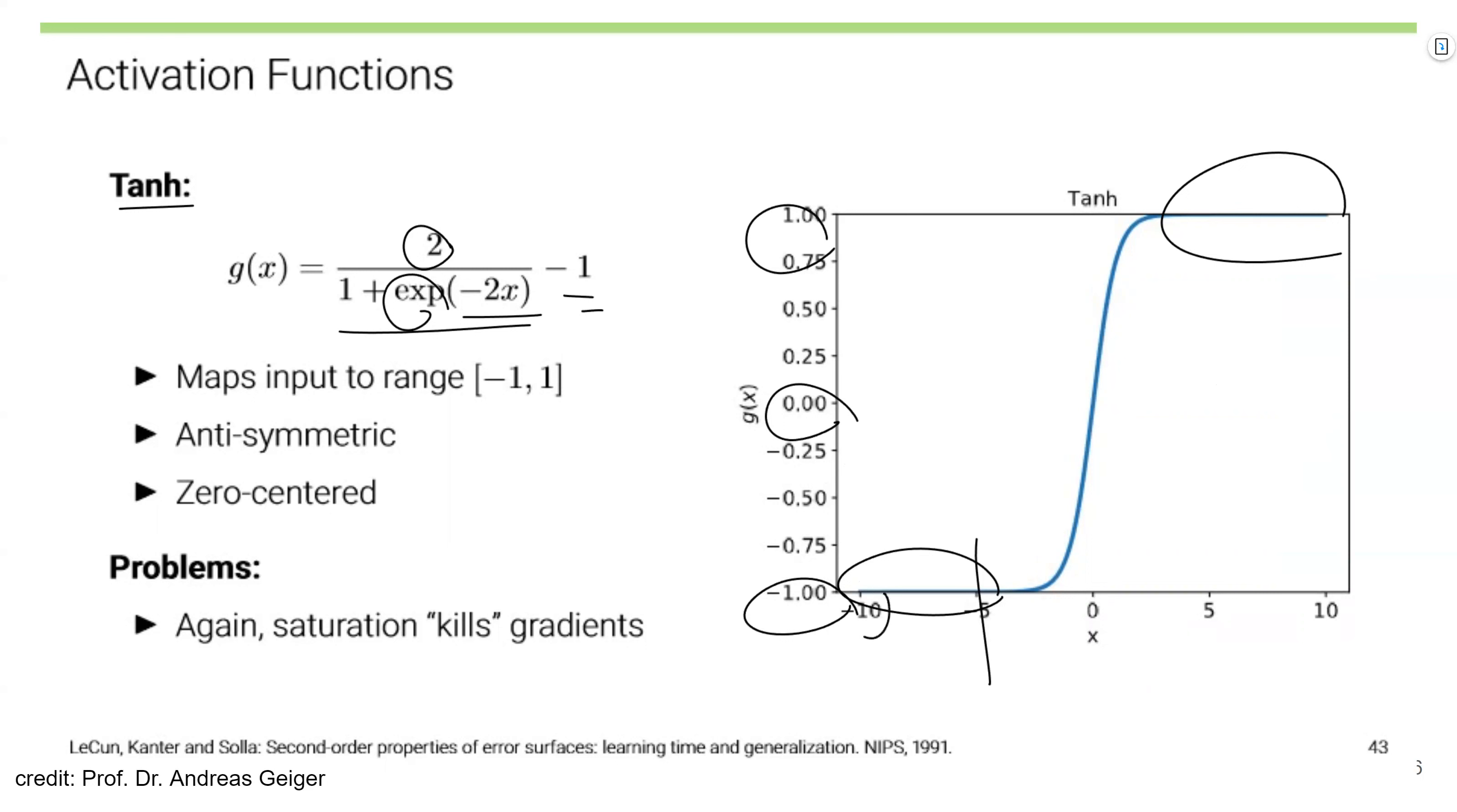And the saturation occurs earlier than sigmoid. For sigmoid, saturation occurred after minus 10 or 10. But for hyperbolic tangent, it occurs after 5. So it's much more sensitive to saturation.